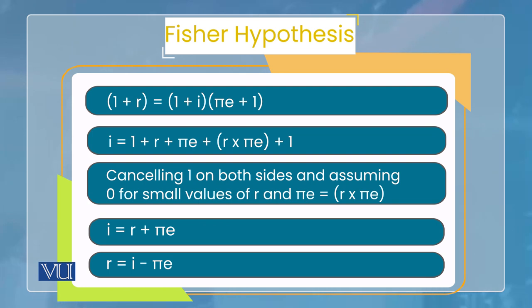Now before moving ahead, note that R×πE — both are very small numbers. For example, real interest rate is in percentage, and normally real interest rate is even less than 1%, and often goes negative. Let's take 1%, which means 0.01. If expected inflation rate is 5%, that is 0.05. Then 0.01 multiplied by 0.05 equals 0.0005. This means when two very small numbers are multiplied, the value becomes almost zero. So we ignore R×πE in this formula. What remains is: I = R + πE, or R = I − πE.